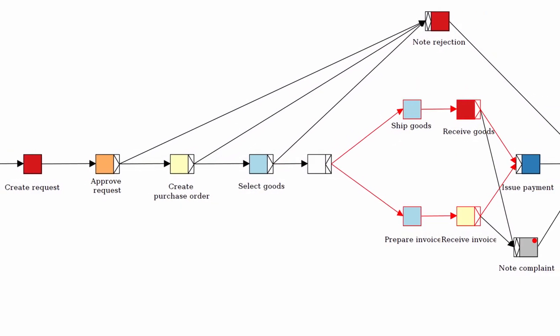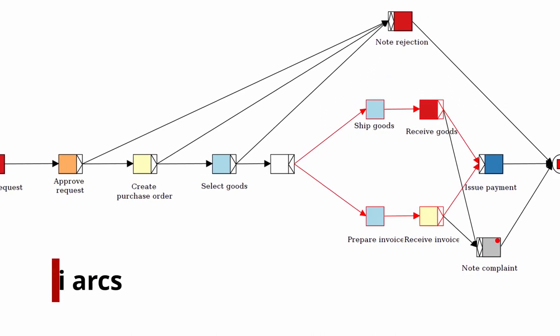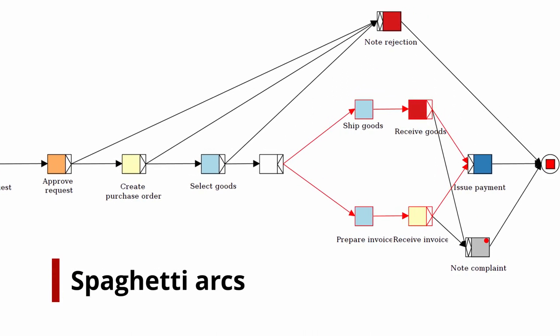If we would try to implement these with ordinary control flow means, we would have lots of arcs going from certain places to the end of the specification. And this would in the end lead to a graph that is more like spaghetti and is not very clear anymore.